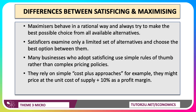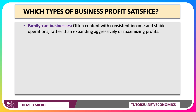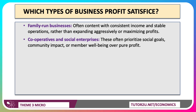They might go for cost-plus pricing — for example, they work out the unit cost of supplies and think they can add 10%, 15%, or 5% as a profit margin. Typically, satisficers tend to be family-run businesses. They're looking for stable income and stable operations, not necessarily looking to grow aggressively and maximise profits.